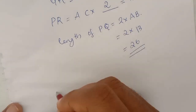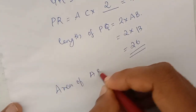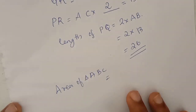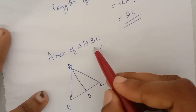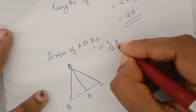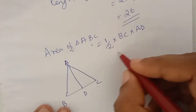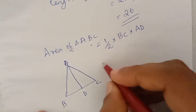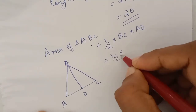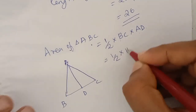What is the area of triangle ABC? The area of ABC is half into base into height, that is half into BC into AD.